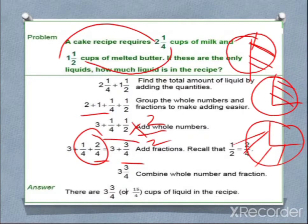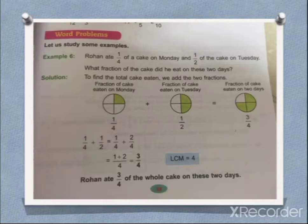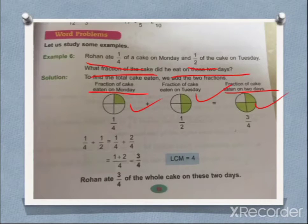I think it is clear. Let us move forward. One more example from your book, and you have to solve this example in your notebook also. Rohan ate 1/4 of cake on Monday, 1/2 cake on Tuesday. What fraction of cake did he eat on these two days? It is very easy. Fraction of cake eaten on Monday: 1/4. Half on Tuesday. Total cake eaten: 1/2 and 1/4 will make 3/4.